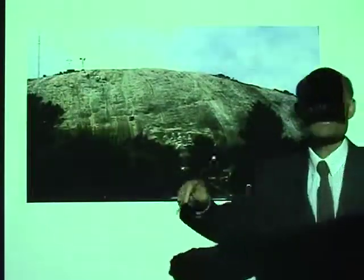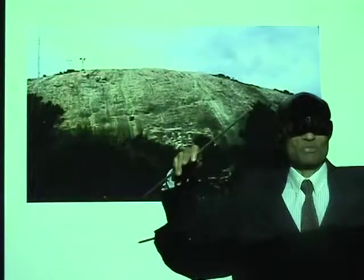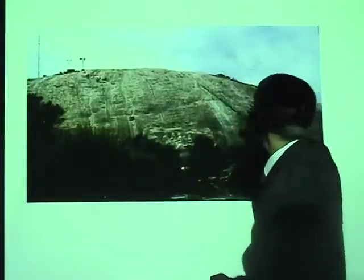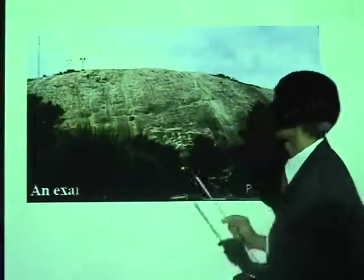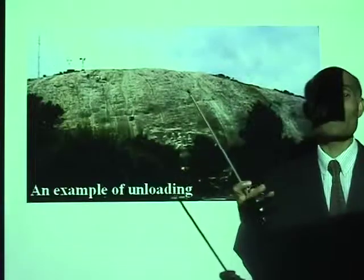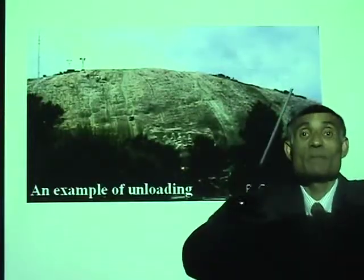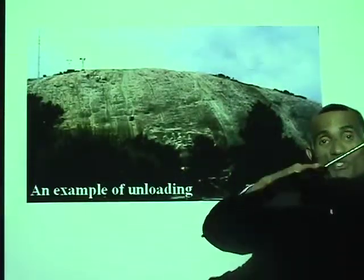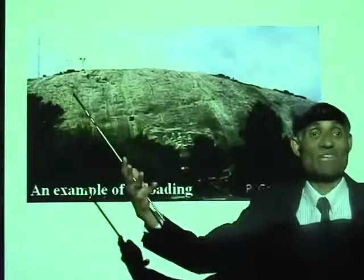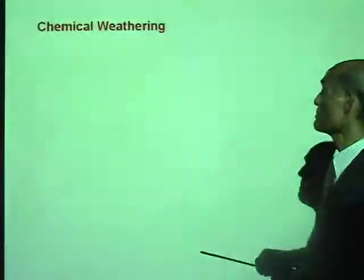This is an example of a hogback. Once it was underground, and when erosion removed all the soil, it surfaced. The pressure release has resulted in the breaking of this rock in several places — this is an example of unloading. Unloading means the surface soil and everything has been removed, the pressure has been released, and the rock then begins to break.